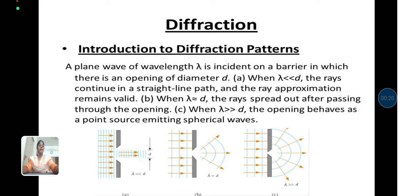A plane wave of wavelength lambda is incident on a barrier in which there is an opening of diameter d. When lambda is less than d, the rays continue in a straight line path and the ray approximation remains valid. When lambda is approximately equal to d, the rays spread out after passing through the opening.